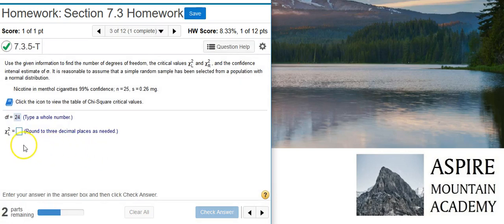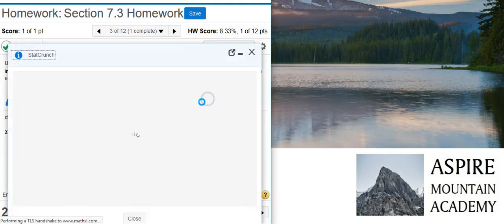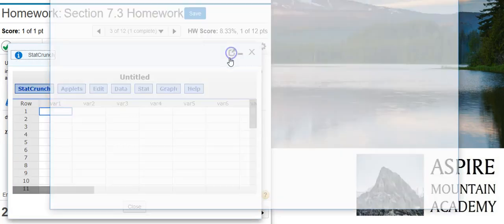Now the next part asks us for the first of two critical values. The one on the left is what's being asked for here. To get the critical values, I'm going to load up StatCrunch and access the distribution calculator that is found inside StatCrunch.